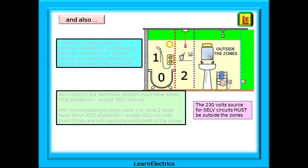A last point on SELV equipment: most SELV equipment will be supplied by a 230 volt transformer — what we call the source. That source, the 230 volt transformer and the 230 volt cables, must be physically situated outside the zones. Again, we are protecting the users from electric shock.